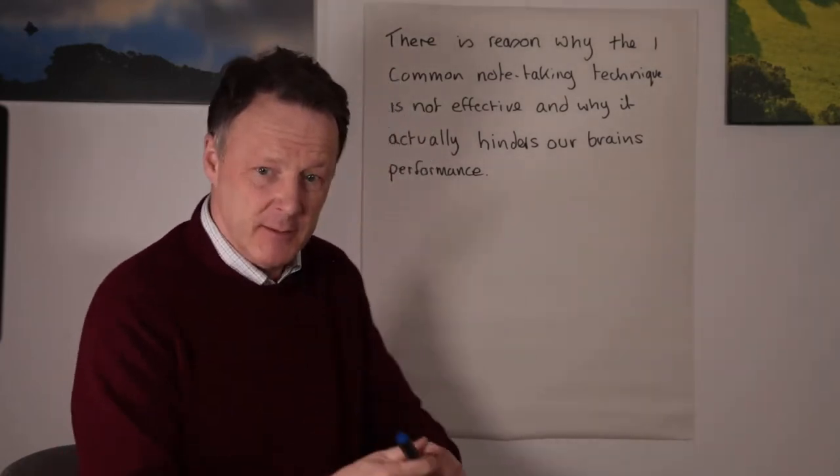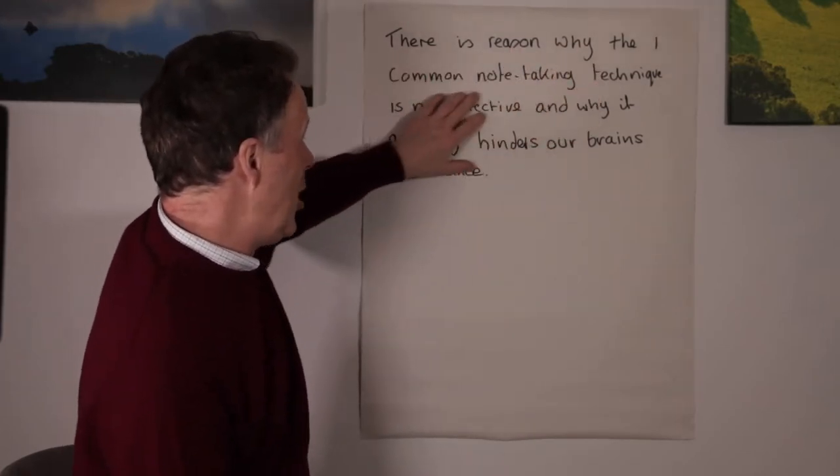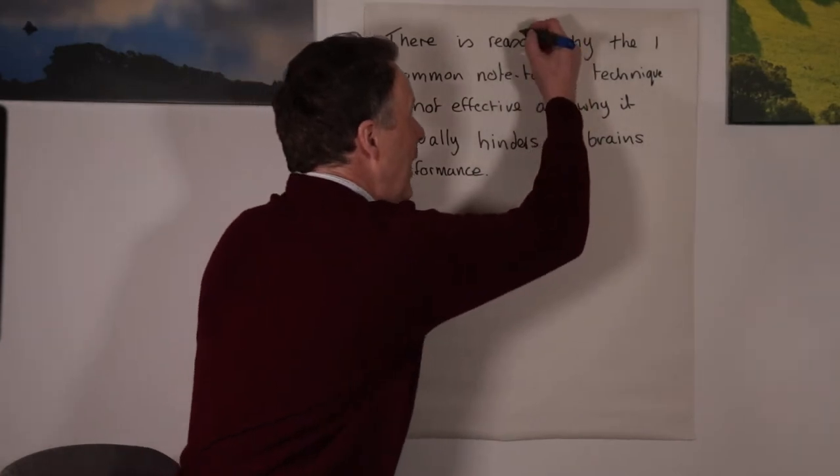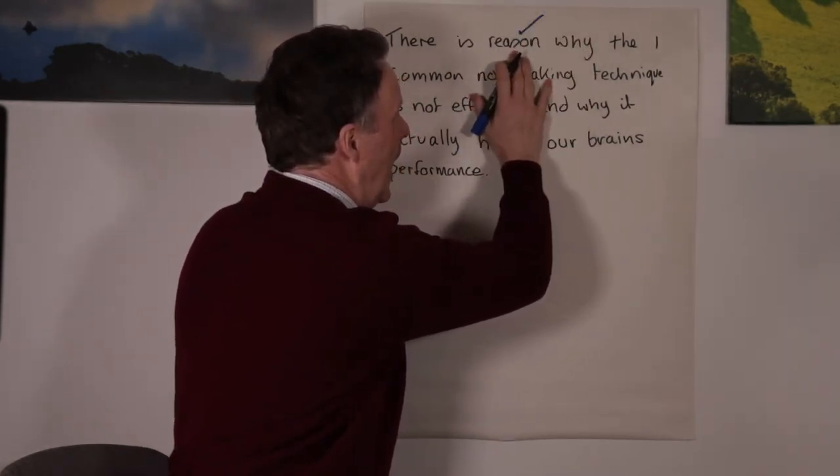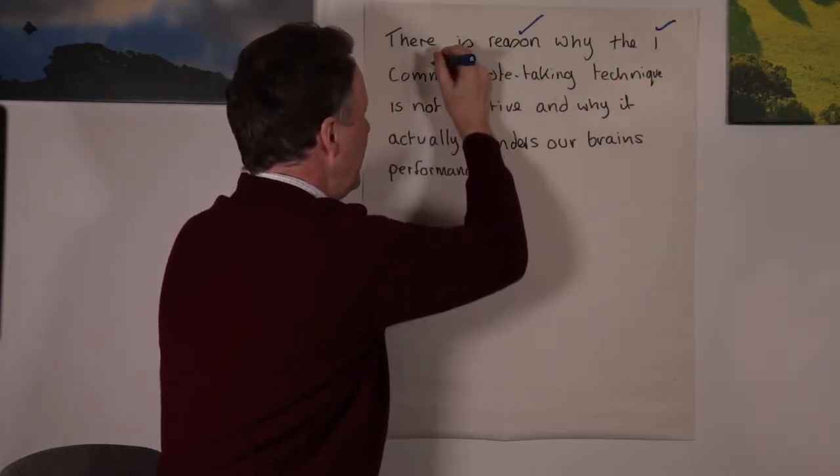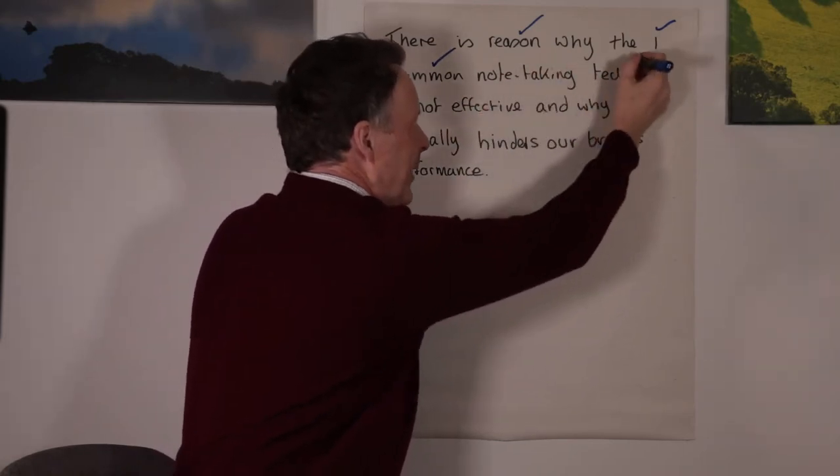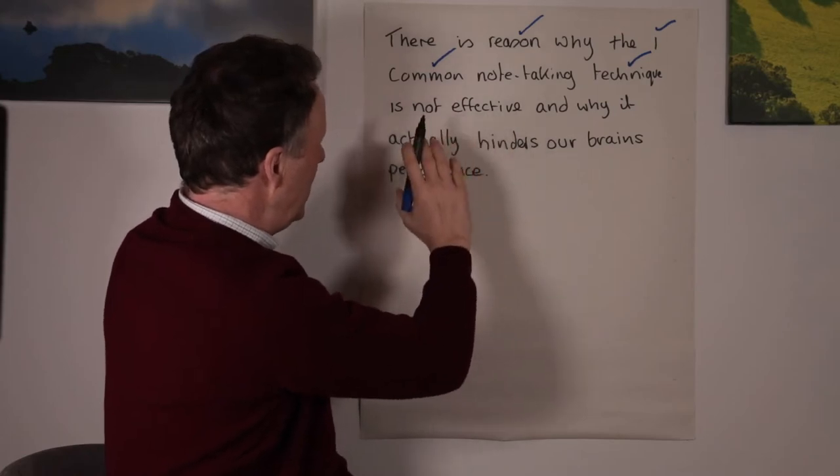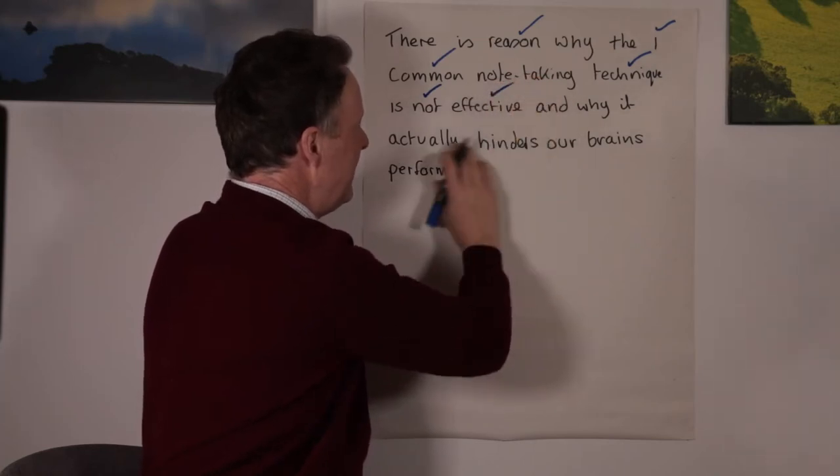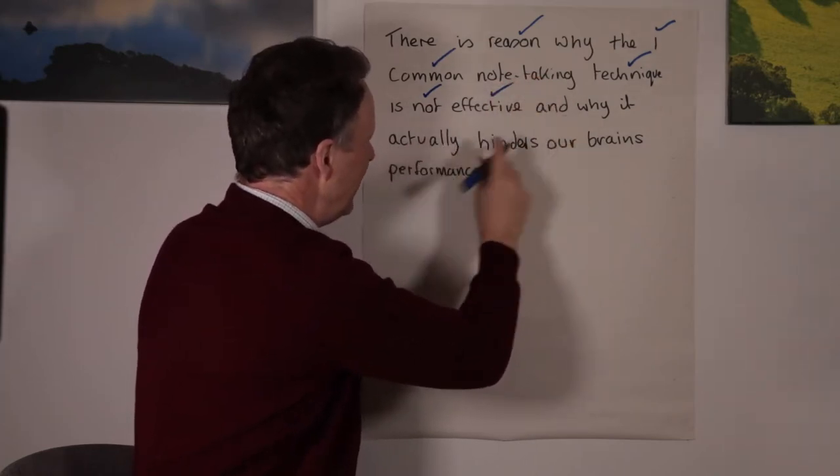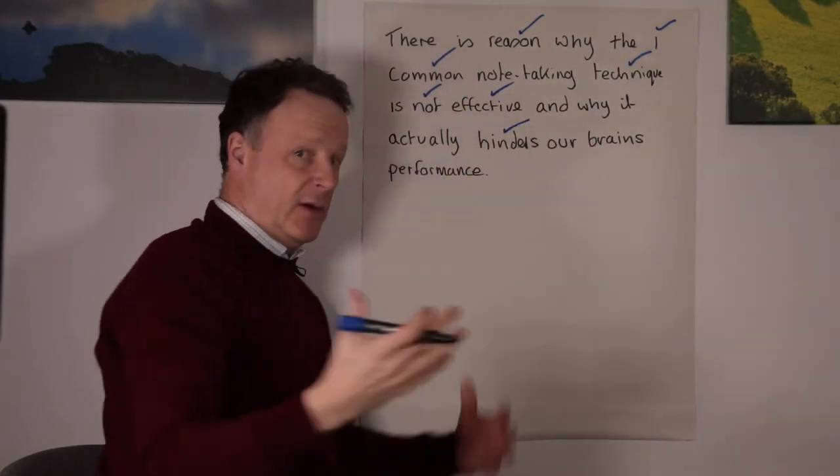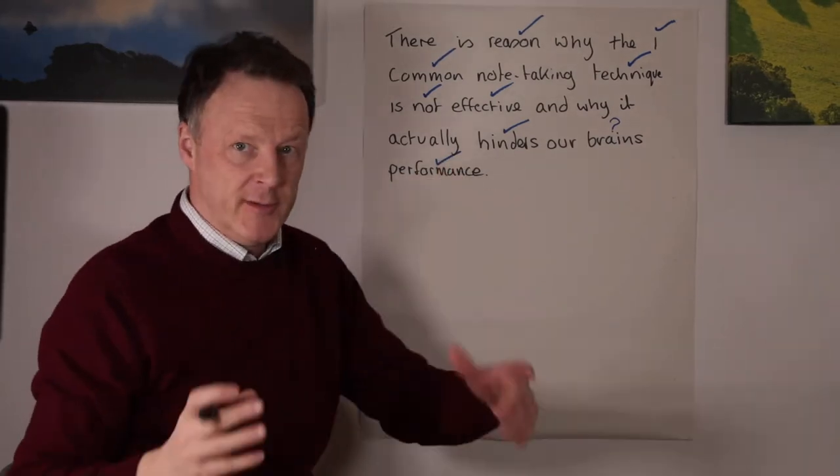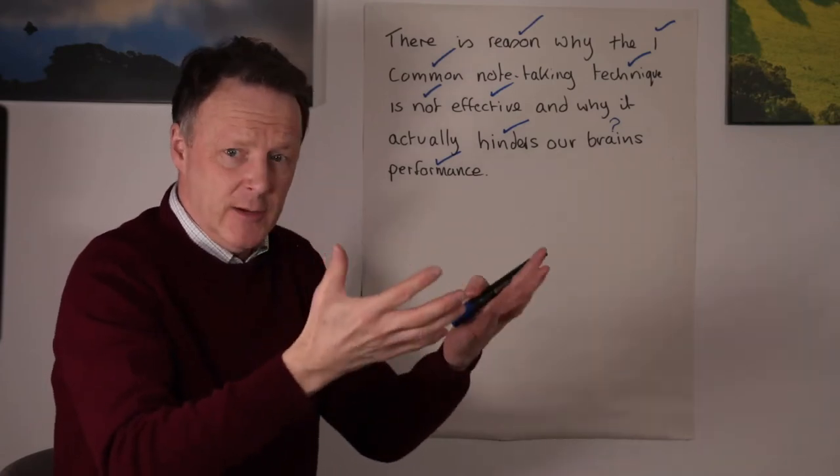And there are four key elements. The first one is deep filtering. So if we take, there is a reason why the one common note taking technique is not effective and why it actually hinders our brain's performance. Deep filtering: I will look for what I think is the important information. So I'll take reason, I'll probably take why, the one, I'll probably take common. I know it's all about note taking, so I'll probably miss that, but I'll take technique. So the reason why one common technique, I'll probably take not effective and why it actually hinders our brain's performance. So I'll take the word hinders. I'll probably decide this as I'm harvesting the knowledge. I'm either going to take brain, but I think I might miss that out because I know what I'm talking about, and I'll probably capture performance. So that's the deep processing. You do this as someone's speaking to you and you just get better at it as time goes on.